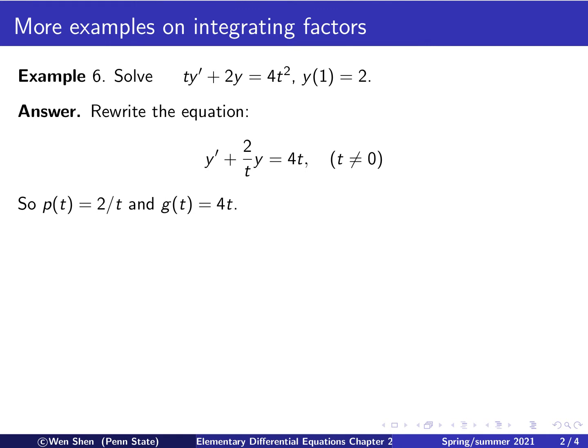So step one, we rewrite the equation into the standard form. We divide both sides by t, so we'll have 1 here. Then we get y' plus 2 over t, y equals, divided by t, I get 4t. And then this operation is possible if we assume that t is not zero.